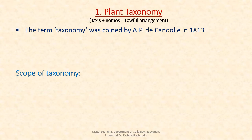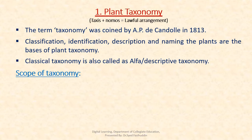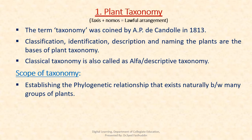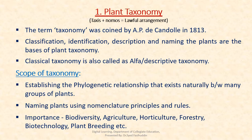The term taxonomy was coined by A.P. de Candolle in 1813. Taxonomy involves classification, identification, description and naming of plants. Classical taxonomy is also called alpha taxonomy or descriptive taxonomy. The scope of taxonomy includes establishing the phylogenetic relationships between plant groups, naming plants using nomenclature principles and rules of ICN, and its importance spans biodiversity, agriculture, horticulture, forestry, biotechnology and plant breeding.